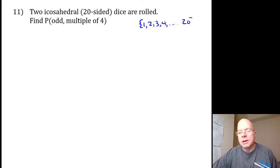up to 20 on the 20-sided icosahedral platonic solid die. Find the probability of getting an odd number on the first die and a multiple of four on the second die. Well, there are 20 numbers, 20 faces on that die. Half of them are odd, half of them are even.